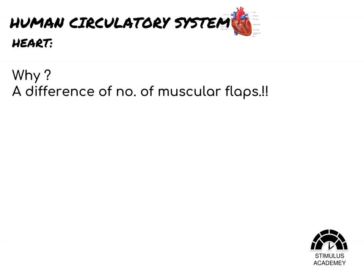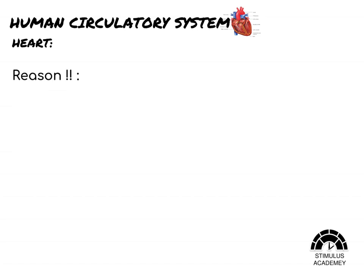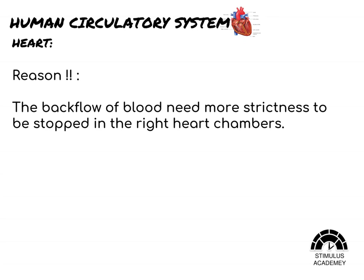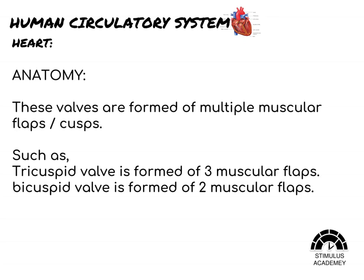A probable explanation for why the tricuspid valve has three muscular flaps while the bicuspid valve has two is that the right side of the heart receives deoxygenated blood, which needs stricter prevention of backflow. While if backflow occurs on the left side, which contains oxygenated blood, it would not be as great a problem.